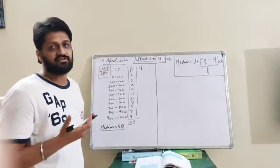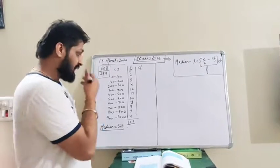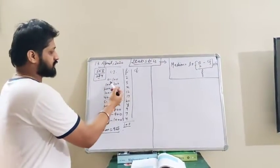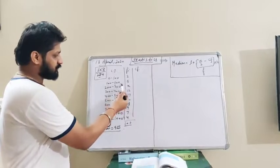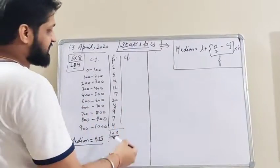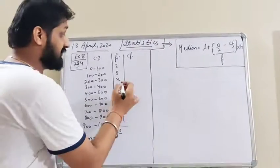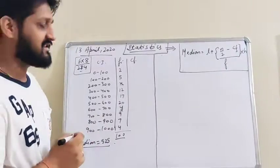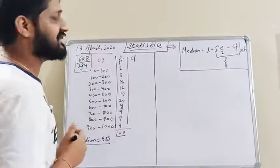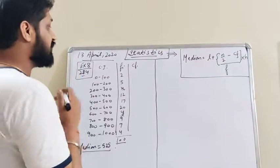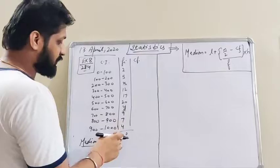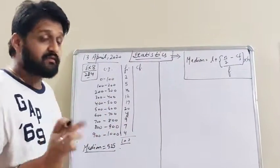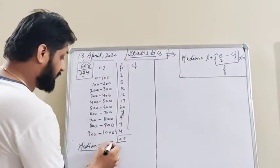This is a very important question and it is based on the median. The class intervals are given from 0 to 100, 100 to 200, and so on. Frequencies are given with some unknown variables x and y. We have to find the values of x and y. What is given: the sum of frequencies is 100 and the median is given as 525.